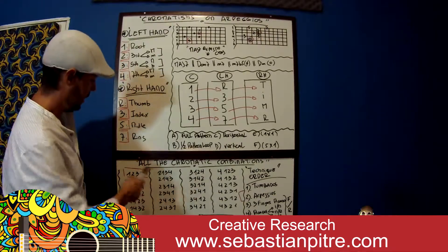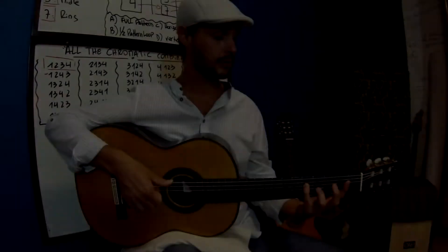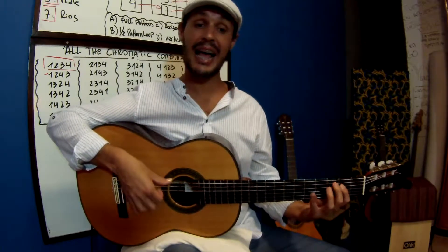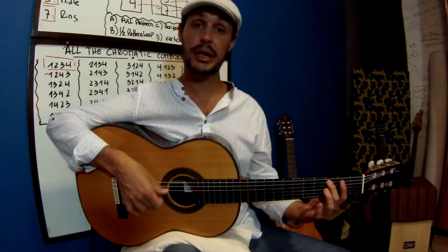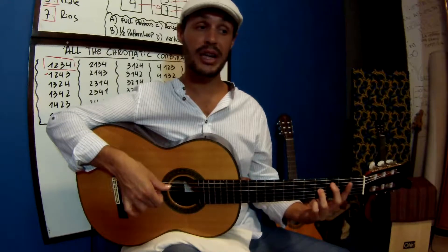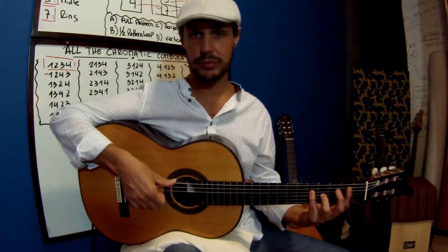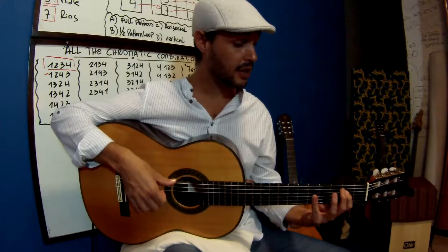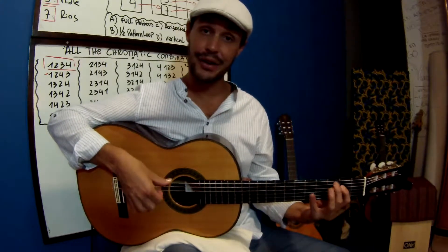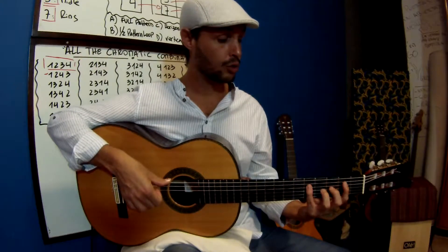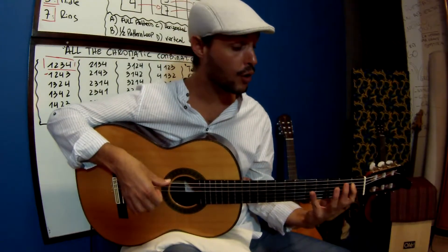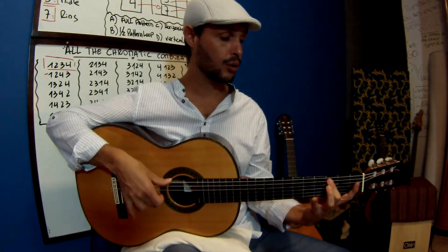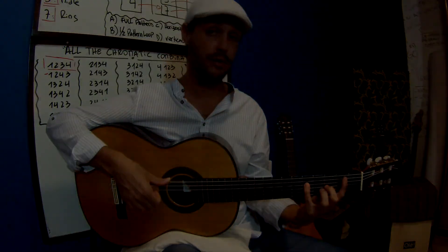So what we have here are all the chromatic combinations for the major seven chord. But I can move to the dominant — I only need to change one note: the seven. I'm going to move to the minor third, root, flat third, five, flat seven.